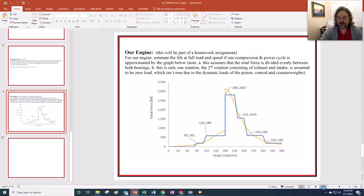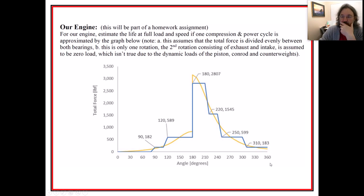Coming back to what I'm using this for, is now we could try to figure out, do an estimation using the techniques that we've described in class, in class 12, to try to figure out, maybe estimate the life of this bearing. For our engine, we want to estimate the life at full load speed if one compression and power cycle is approximated by the graph below. We also know what the RPM of this engine would be. This is going to be with full power. So we're just going to say, when is the bearing going to fail?